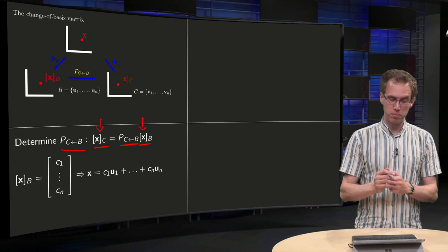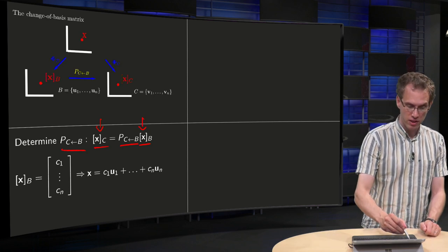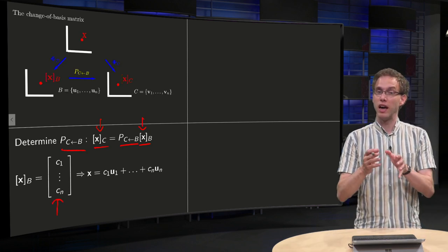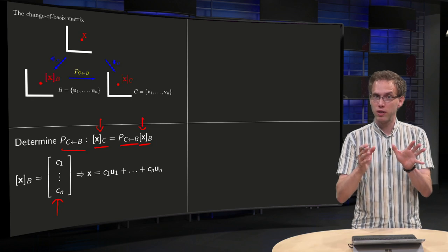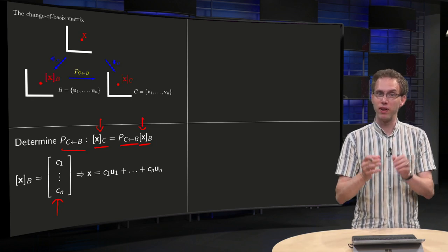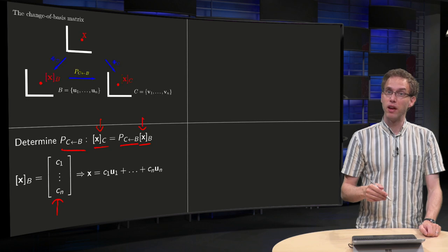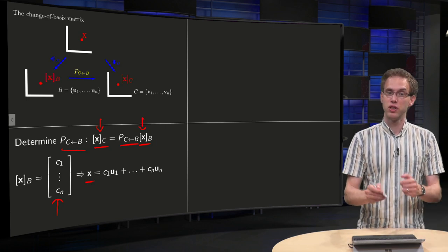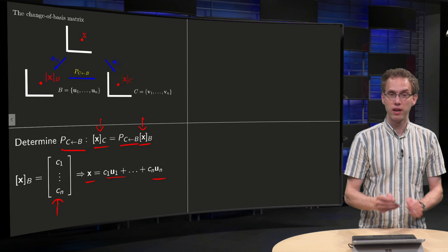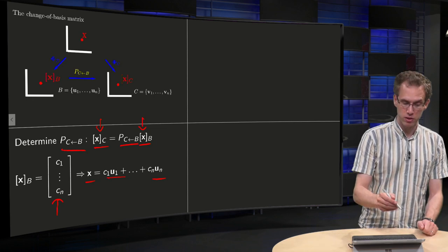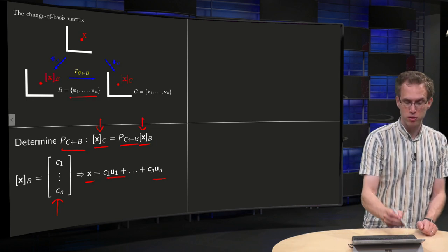So first we start with x_B, and we write it as c_1 up to c_n as the weights. We do not know the weights, but that doesn't matter; x_B is some vector in R^n. Then we know in principle what our x is: x equals c_1 u_1 up to c_n u_n, because x_B contains the weights with respect to the basis B.